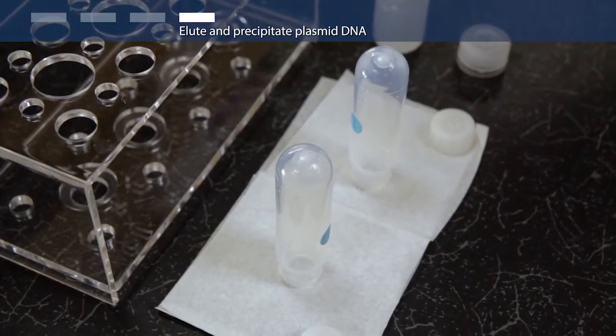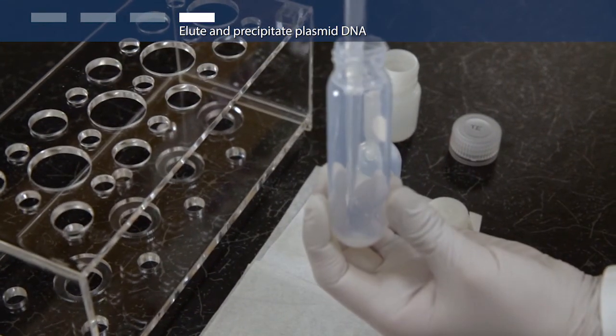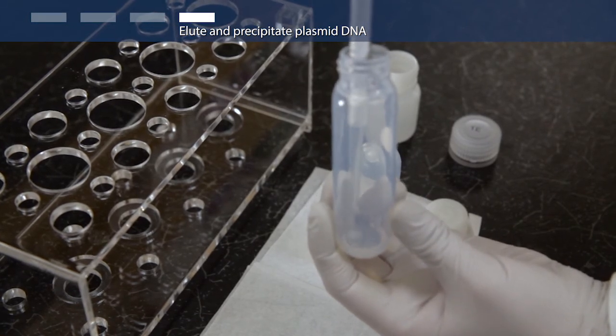Remove the supernatant. Air dry the pellet for 10 minutes by placing the tube upside down on a chem wipes tissue. Then re-suspend your purified plasmid DNA.